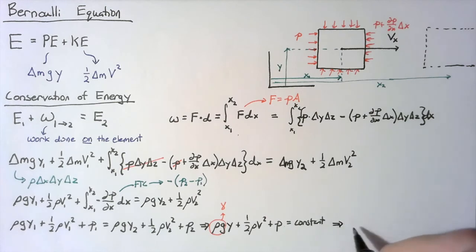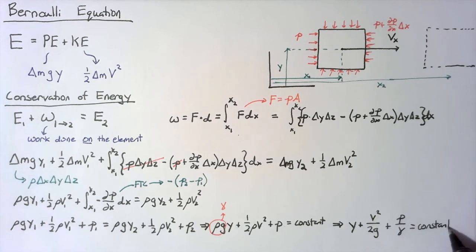So if we write this divided through by gamma, it becomes a statement about the pressure head of a particle as it travels through a flow field.